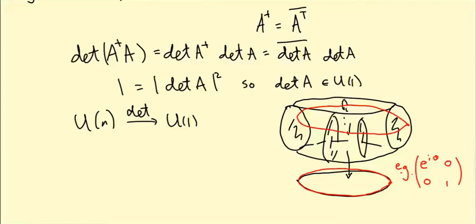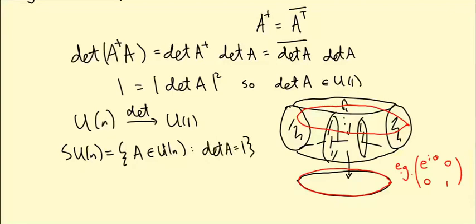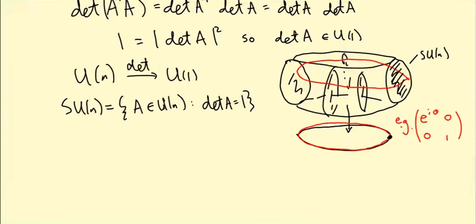What we can do is restrict to the subgroup SU(n): the set of matrices A in U(n) that are unitary with det(A) = 1. This is just a slice of U(n) living over the point 1 in the unit complex numbers. This is a subgroup, and it turns out to be simply connected for all n.